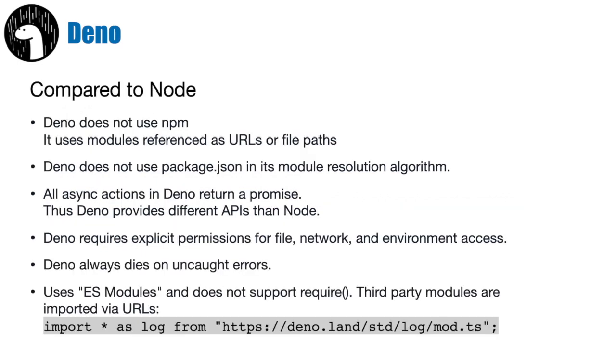Dino compared to Node: Dino does not use the Node Package Manager, so package management is drastically different. Node uses NPM to download and install packages, but Dino does it very differently — it uses modules referenced as URLs or file paths. Third-party modules are imported as URLs, and once they're imported, they're saved into cache so you can still compile and run your projects even if you don't have network access. All async actions in Dino return a promise, so Dino's top-level API is very different from Node's.